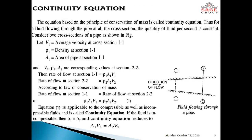Now we start the continuity equation. The equation based on the principle of conservation of mass is called the continuity equation. Thus, for a fluid flowing through a pipe, at all cross sections, the quantity of fluid per second is constant.